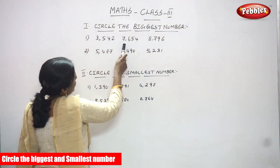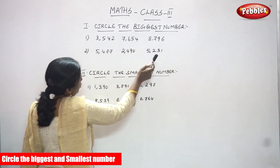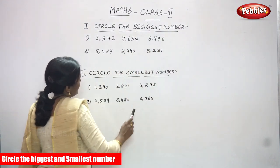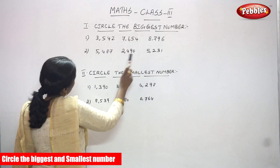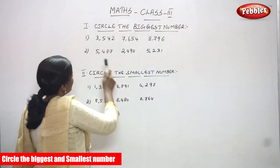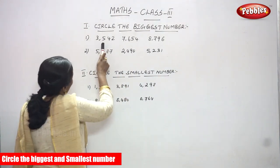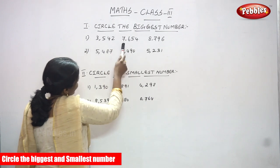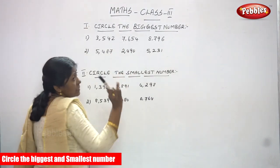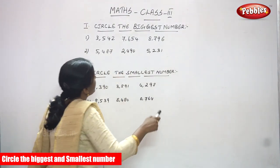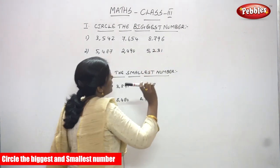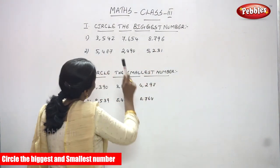The first number is 3542, the second number is 7654, and the third number is 8796. You must first know how to read the numbers: 3542 is the first number, 7654 is the second number, and 8796 is the third number.